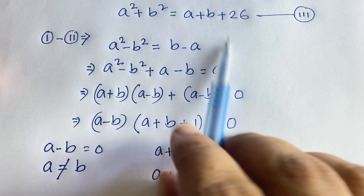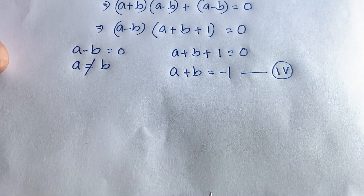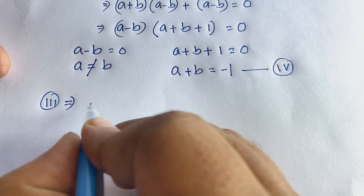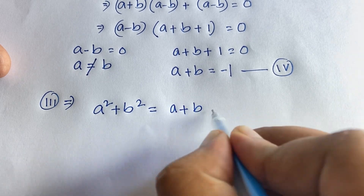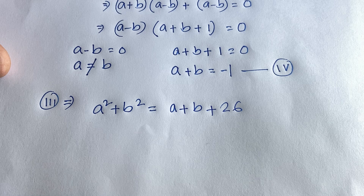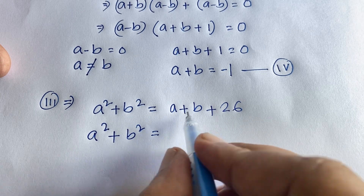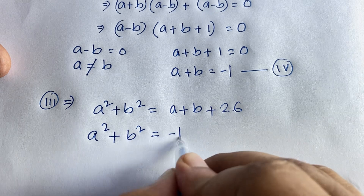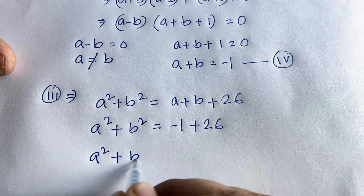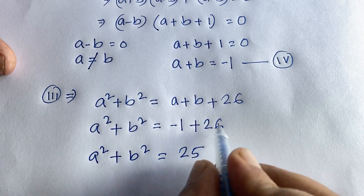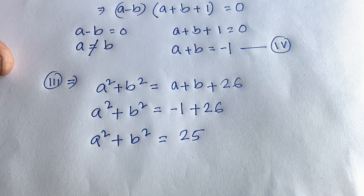Our third equation is a squared plus b squared equals a plus b plus 26. Substituting our fourth equation, a plus b equals negative 1, into the third equation: a squared plus b squared equals negative 1 plus 26, which gives a squared plus b squared equals 25.